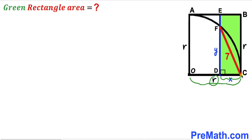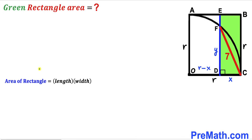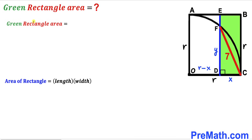We know the whole segment is radius r and CD is x, so segment OD is going to be r minus x. Since we're interested in calculating the area of the green shaded rectangle EBCD, let's recall the area formula: area equals length times width. In our case the dimensions are x and r, so the area of the green shaded rectangle is simply x times r.